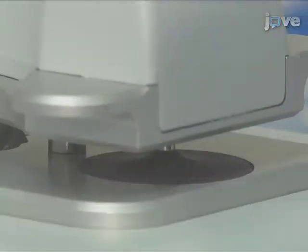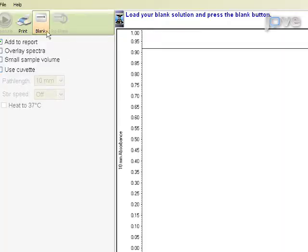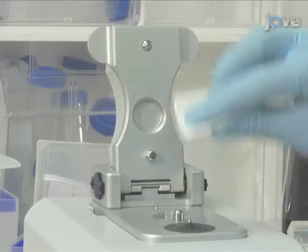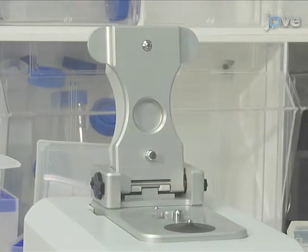Once the sample is loaded, lower the arm. Click blank. When blanking is complete, wipe the blank solution from the lower and upper pedestals using a dry laboratory wipe.